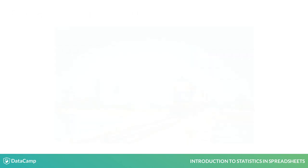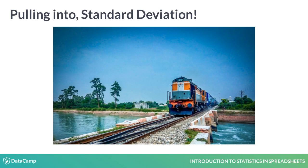Next stop: standard deviation. Keep in mind variance is the average of squared values, so the variance is different from the original sample values, making it less intuitive. Most often, you will need to make sense of the variation by putting it in the scale of the original data.